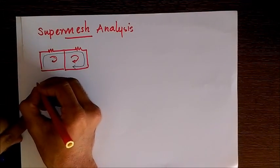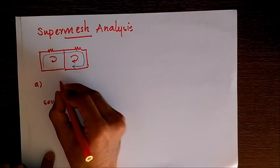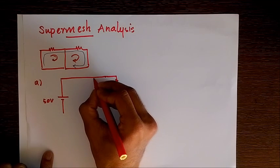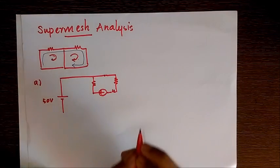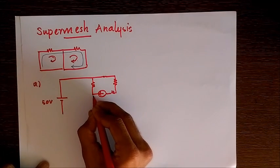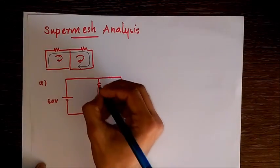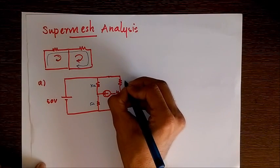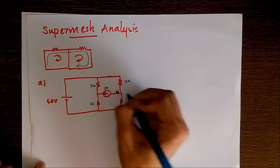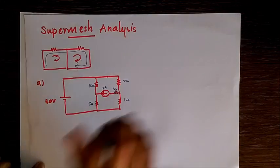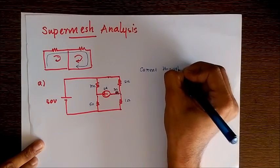Let's understand super mesh analysis with the help of a problem. I'm drawing a simple circuit. This is a 50-volt battery, 10 ohm, 5 ohms, 2 ohm, 1 ohm, and a 2-ampere current source, with its direction towards the left. Here we also have a 3-ohm resistor. This is the circuit, and we have to find the current through the 5-ohm resistor.